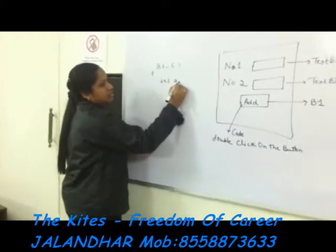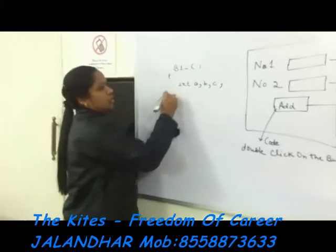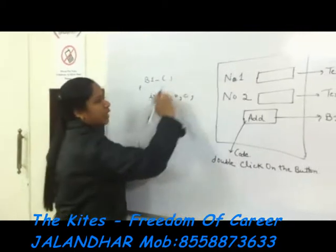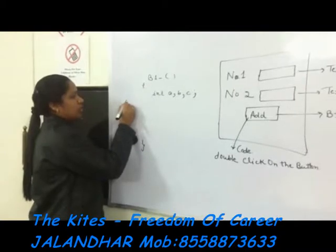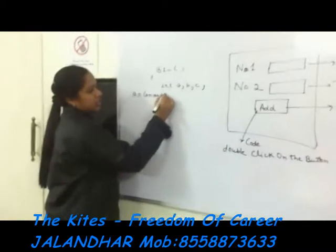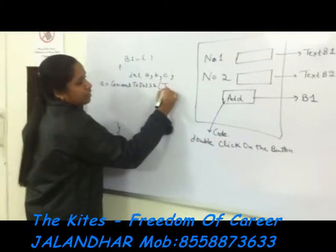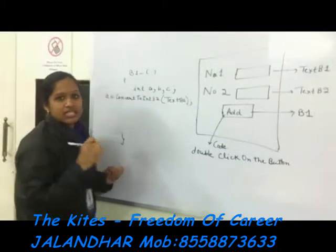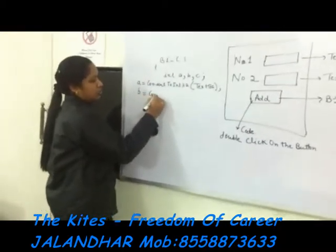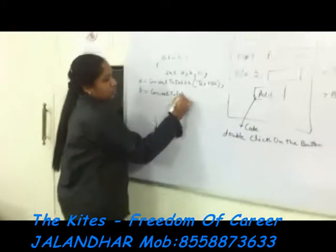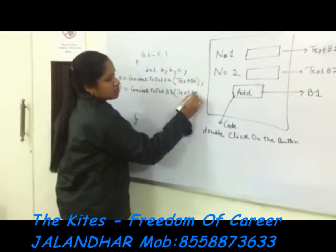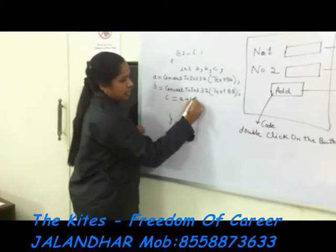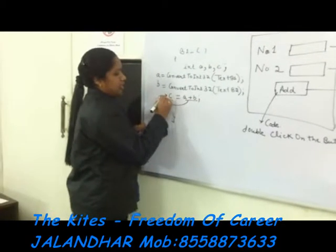First, we declare three integer variables. After that, we need to convert the value of the first textbox to an integer type variable. For that, we use: A = Convert.ToInt32(TB1.Text). Same with B: B = Convert.ToInt32(TB2.Text). To perform the addition operation, we do A plus B, and it will provide the value in another variable, that is C.